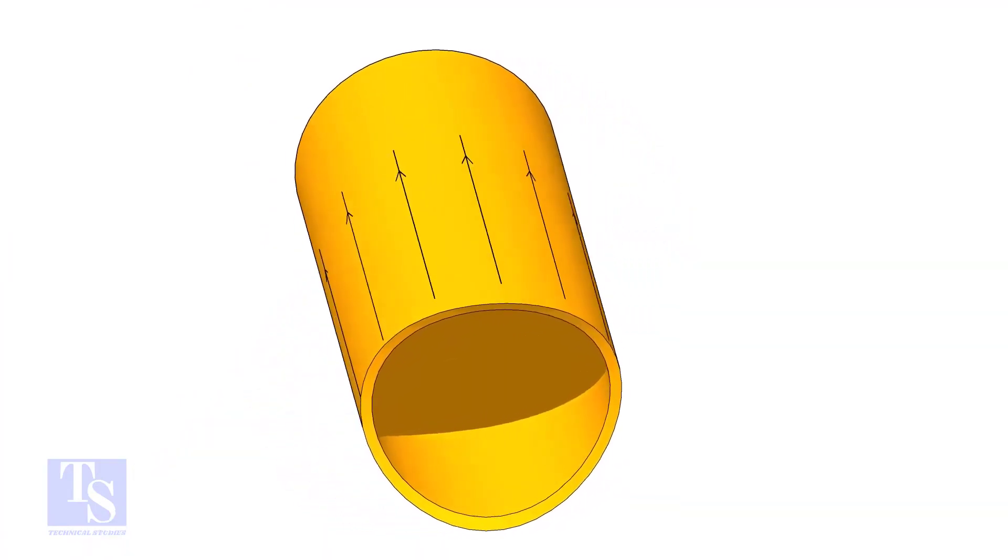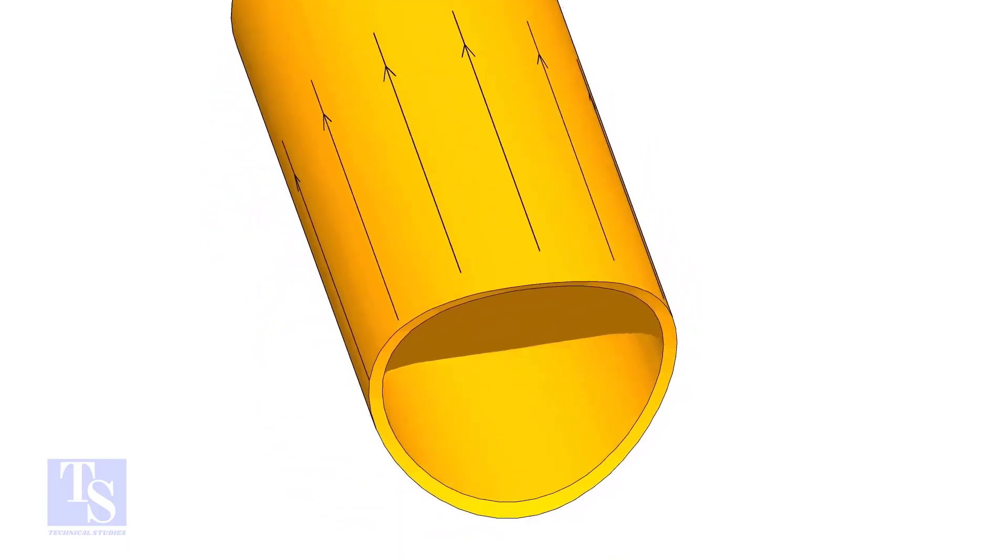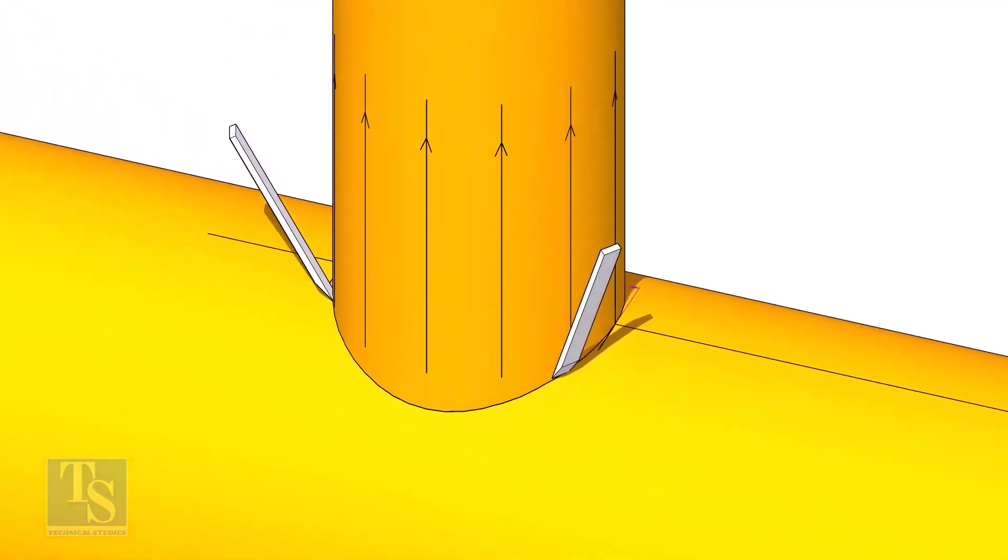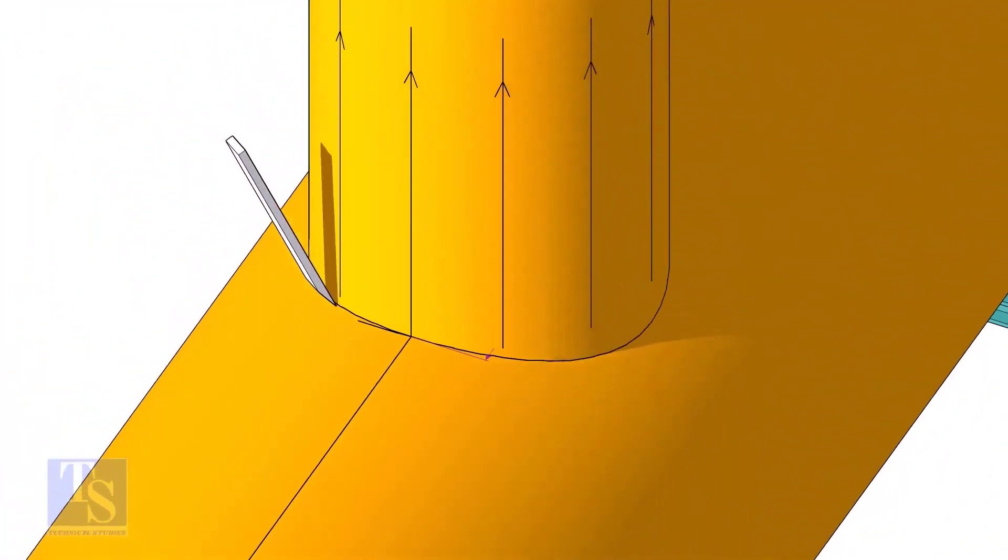After cutting and grinding the notch on the branch pipe, put it on the header. Make sure it is exactly in its position and mark the opening on the header as shown.